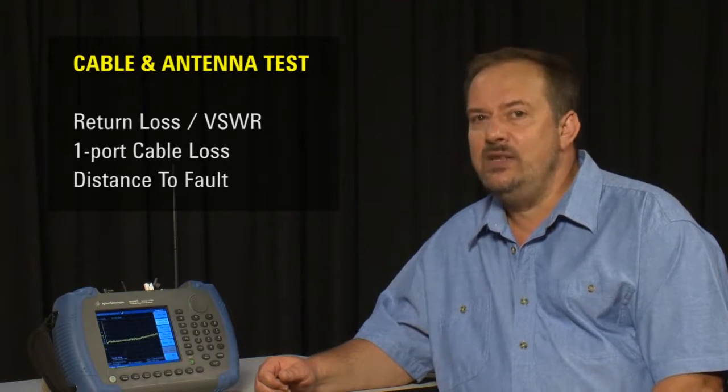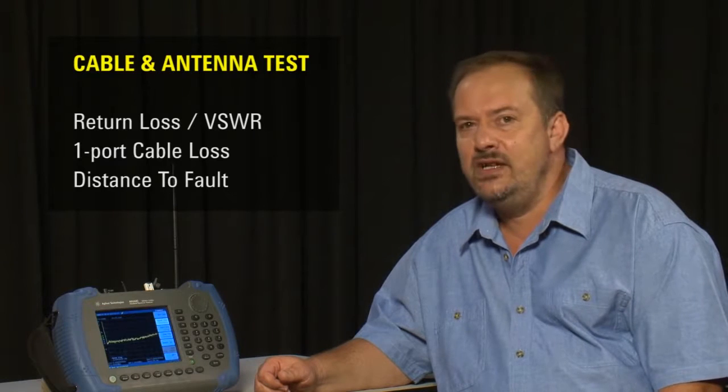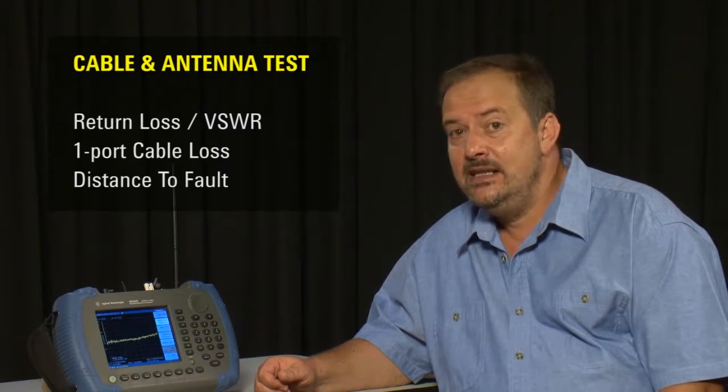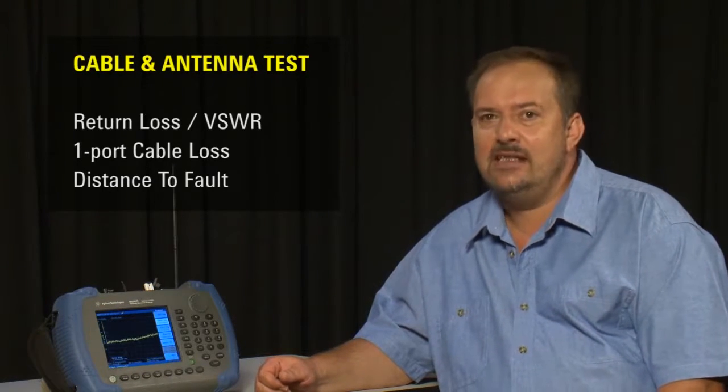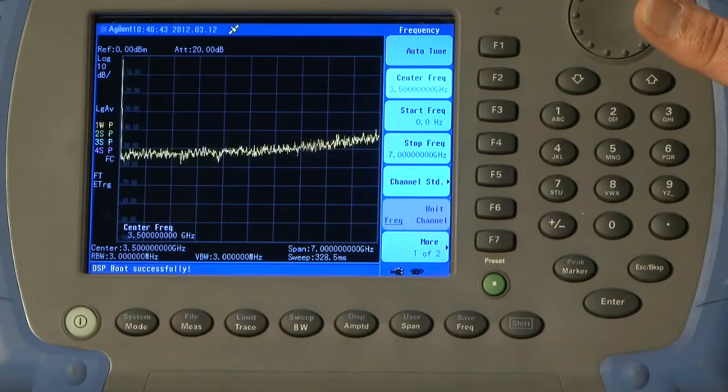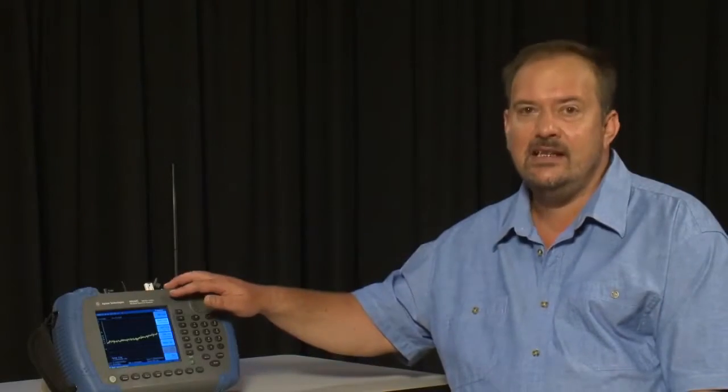These are the measurements we need to make to confirm that an antenna and cable are working according to specification, are not damaged, and with no connector problems. The CAT option is available on the N9342C, the 7GHz model, and the great advantage of this option is that the directional bridge is built in, greatly simplifying the measurement setup.